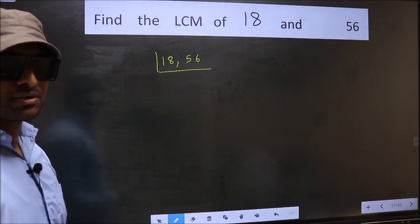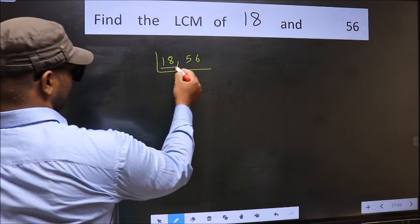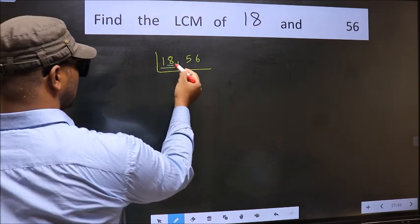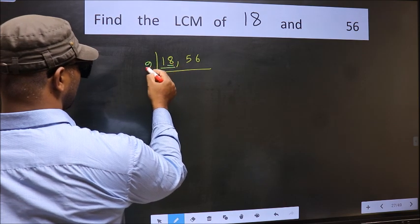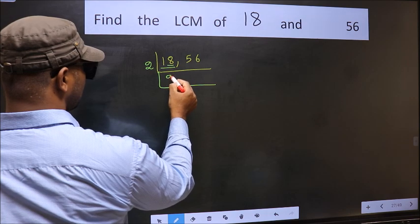Now you should focus on the first number, which is 18. In this number, the last digit is 8, which is even, so take 2. When do we get 18 in the 2 table? 2 nines, 18.